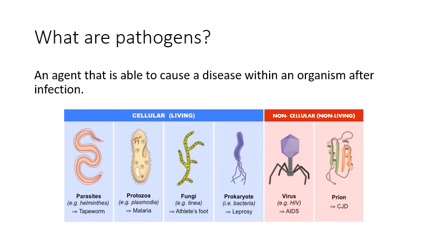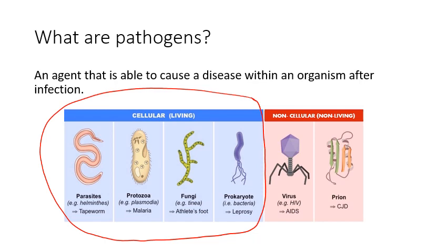Typically when we think of pathogens, most of the time we think of cellular organisms, meaning that they contain living cells — one or more of them. The typical example we think of is usually a bacteria, which is an example of a prokaryote. All of these things can cause infections and are examples of pathogens, but there is also another side of pathogens — the non-cellular side.